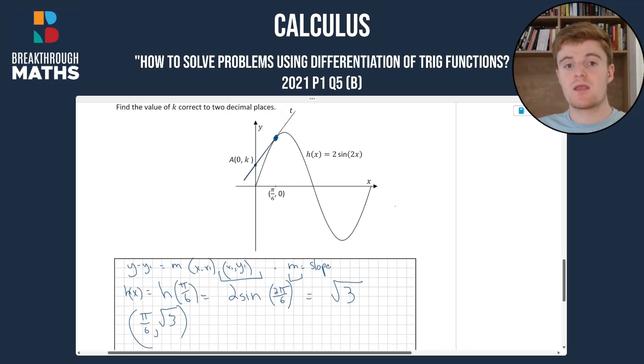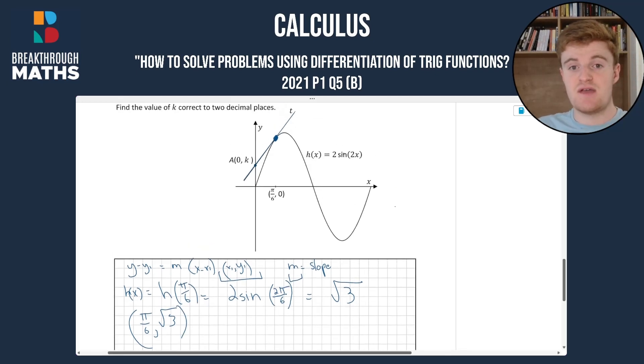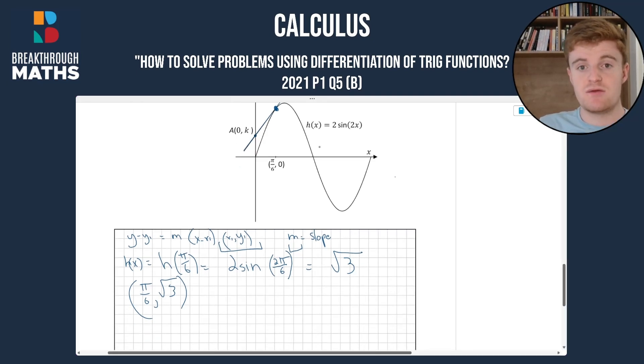And now to find the slope, we're going to differentiate h(x) and plug in π/6 because we'll get the rate of change at that point, at the point which it intersects t, which will give us the slope at that point. And because t touches that point as well, it'll give us the slope of t. So we're going to differentiate 2sin(2x). So h(x) = 2sin(2x). So h'(x) or h dash of x. This is going to be a chain rule type of differentiation.